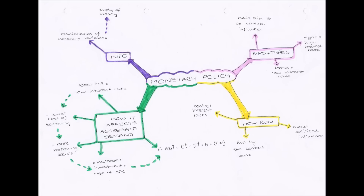Our two types of monetary policy, if we're controlling the supply of money with interest rates, are one with a high interest rate and one with a low interest rate. A high interest rate is called tight monetary policy — you're being tight with your money, charging more to borrow it. Loose monetary policy is when the interest rate is low, allowing more people to borrow. Monetary policy is run by the central bank, or the Bank of England, and they control the interest rate.